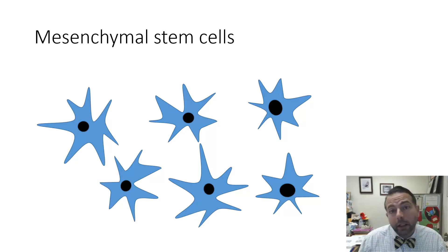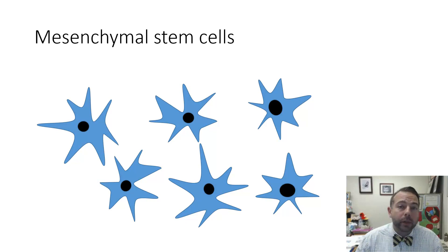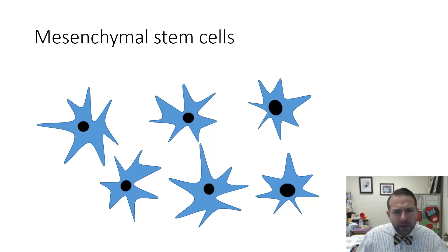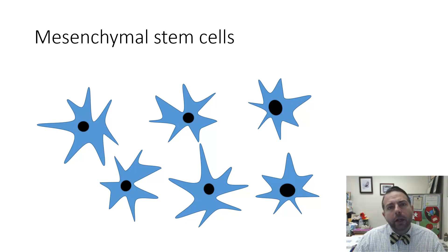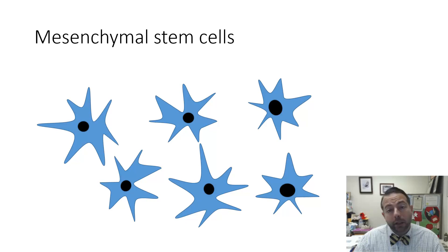Cartilage, like all true connective tissues, begins as mesenchyme. These mesenchyme stem cells are going to be in kind of an amorphous mess, often within some kind of membrane, and they're going to undergo two processes on their way to becoming cartilage tissue.